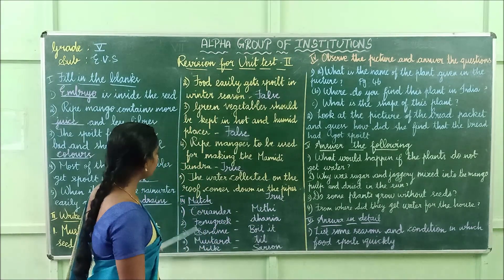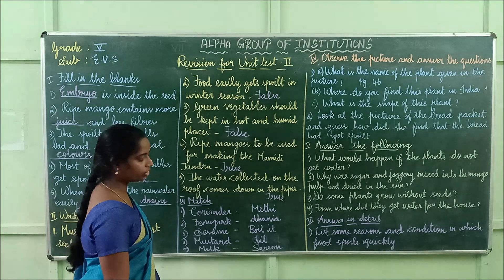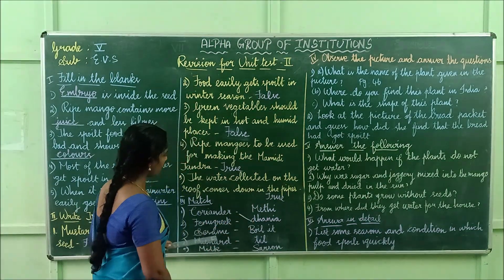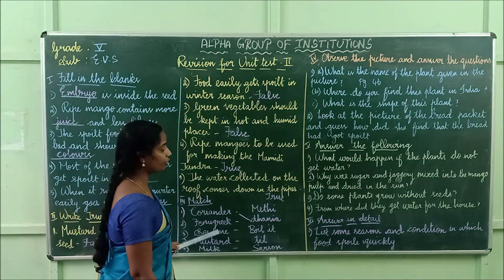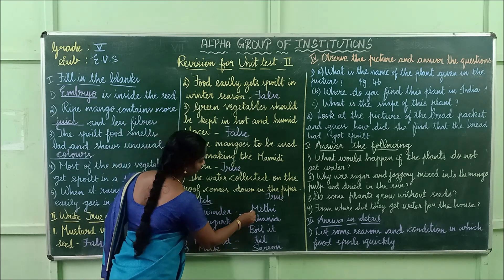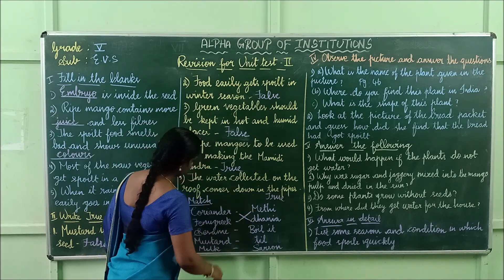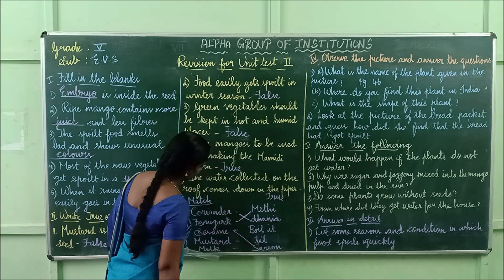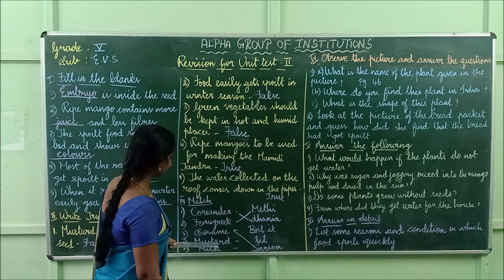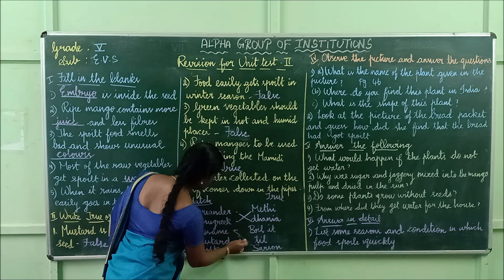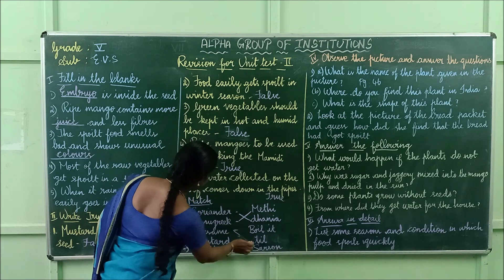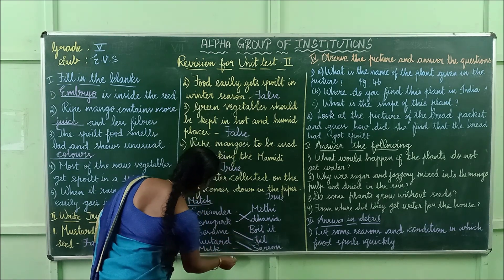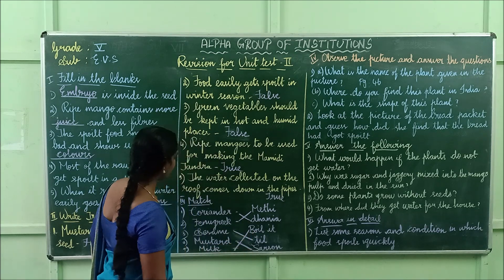Now let's move to match the following. Coriander — dhania. Fenugreek — methi. Sesame — the answer is till. Mustard — sarson, for milk boiling.